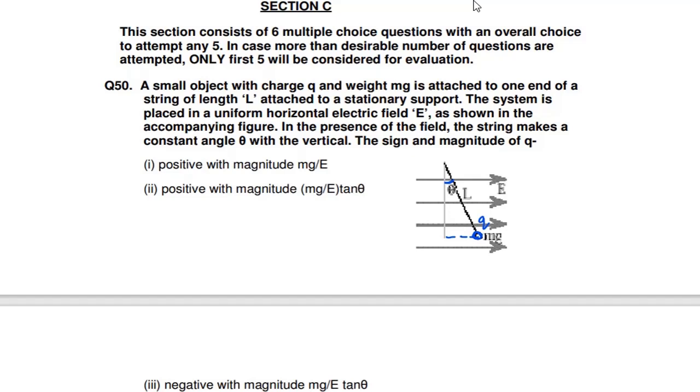You can see we have a string, so this means string can cause tension T. So this will be angle theta, why? Alternate interior angle.